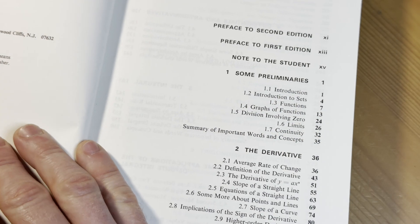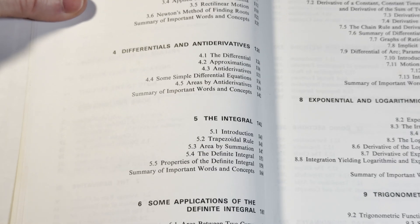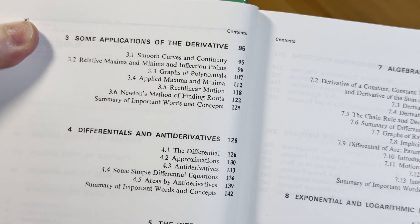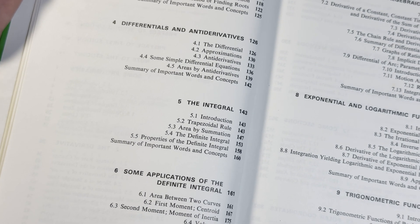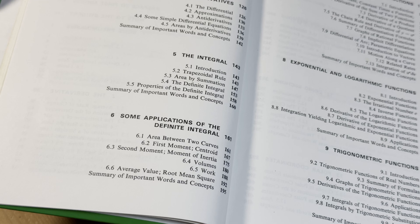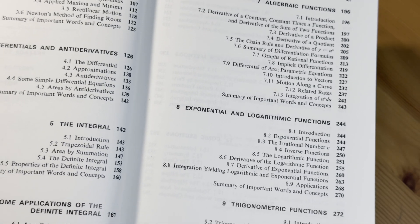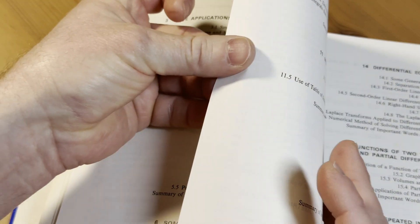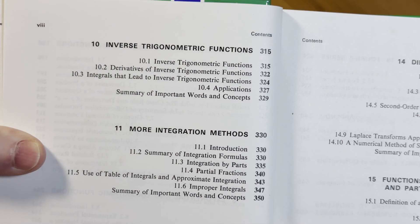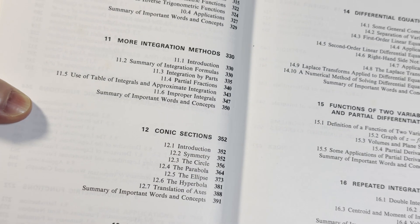So some preliminaries, the derivative, so basic Calc 1 stuff, right, so far. Then we have some applications of the derivative, differentials and anti-derivatives, the integral, some applications of the definite integral. So far, all Calc stuff. Algebraic functions, exponential and logarithmic functions. I mean, it is a calculus book. Trigonometric functions. But there's other stuff in here. I've seen other stuff in here that's not calculus. Inverse trigonometric functions, more integration, conic sections. Okay, but that leads us to more calculus.